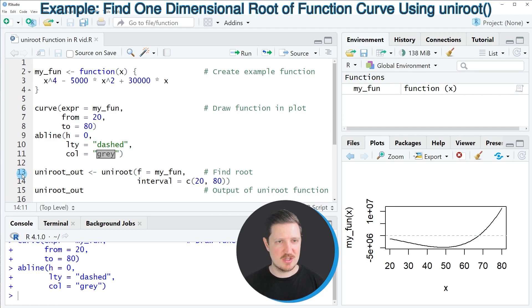We can do that as you can see in lines 13 to 14 of the code. In these lines of code, I'm applying the uniroute function to our user-defined function with the same intervals that I have already specified when I have drawn my function curve. After running lines 13 to 14 of the code, a new data object called uniroute_out is appearing at the top right.